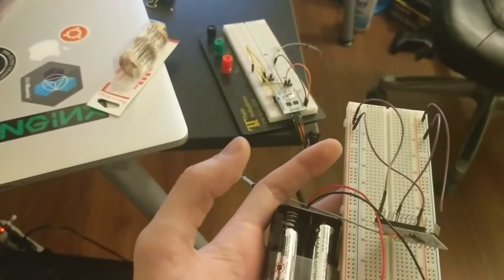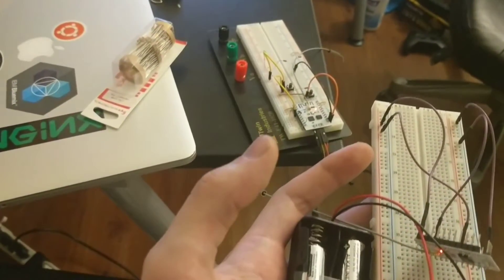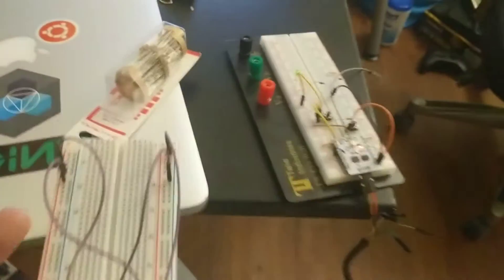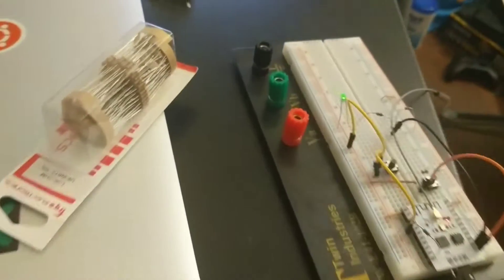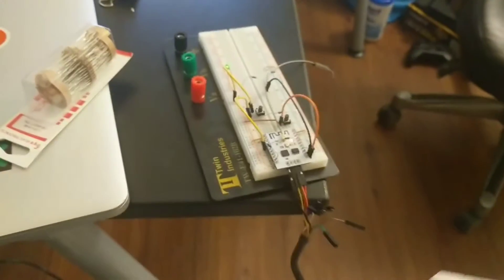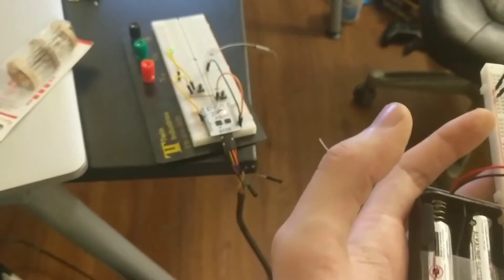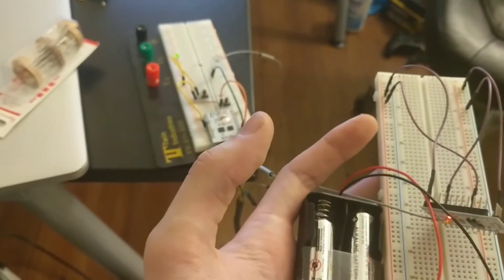So what I have here is two ESP8266s, one that I'm holding and one that's running off of battery power. But this one right here has an LED. And what I've managed to get these guys to do is to detect proximity between one another.